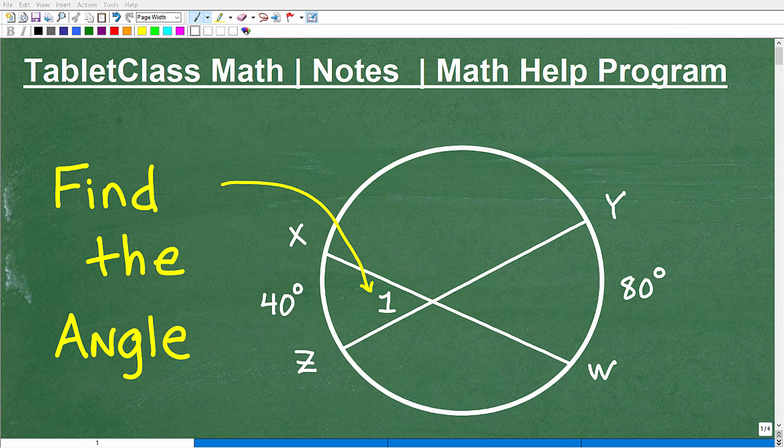Let's take a look at this problem. We have a circle and some lines going through the circle. Those line segments are called chords, just in case you didn't know that. We're asked to find the angle, this angle right here, angle 1. So it's the measure of that angle right there. That is the question. We're given some additional information here. We're told that this arc is 40 degrees and the measure of this arc over here is 80 degrees.